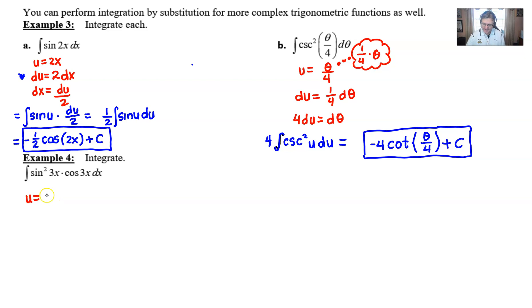u is going to be sine of 3x to the first power. That derivative is going to be nice. It's going to give you 3 times the cosine of 3x. See the chain rule there? And I'll swing the dx over.